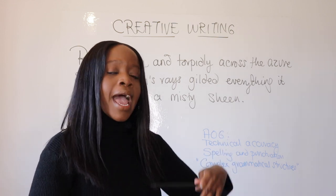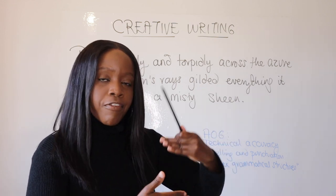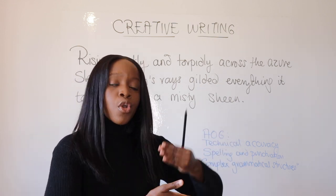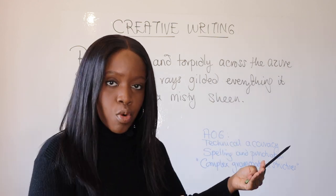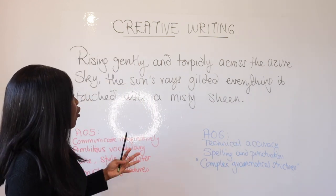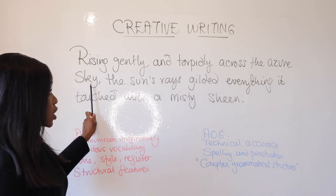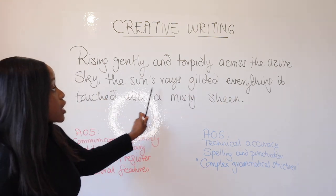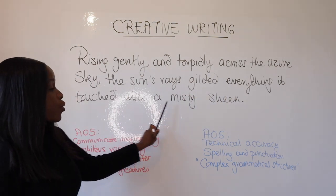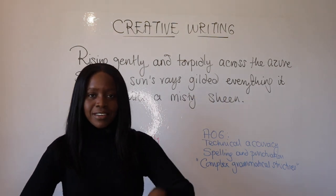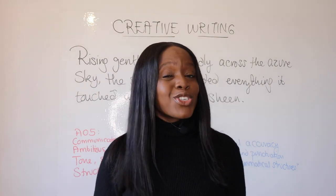This is why I think this is such a perfect sentence to use to start any creative writing piece. Memorize it, apply it, and you're going to find it comes easier as you practice more and more stories. One last time: "Rising gently and torpidly across the azure sky, the sun's rays gilded everything it touched with a misty sheen." Use that as your story starter for creative writing and I guarantee your teacher is going to be super impressed.